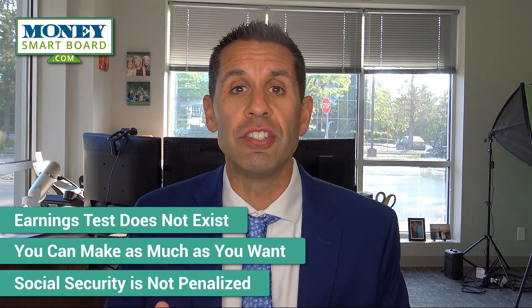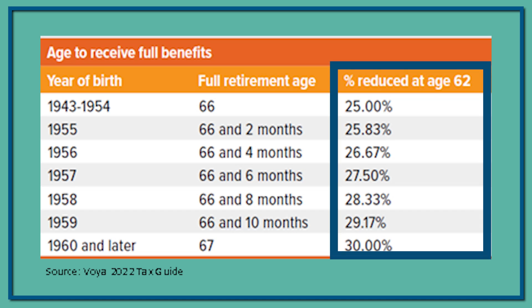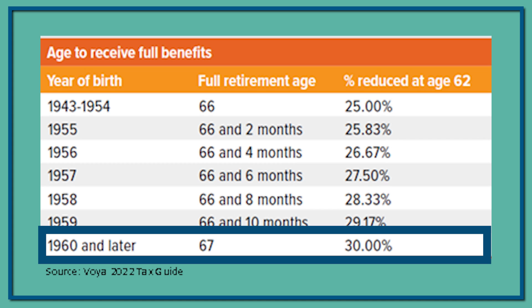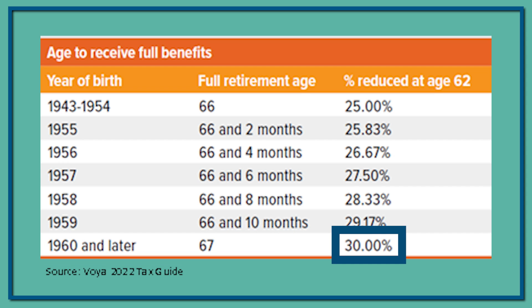We're only talking about the years that you have yet to reach your full Social Security age. Looking at the chart again, the far right column shows how much your Social Security benefit is reduced if you turn it on at age 62. If you were born 1960 or later and turn on your benefit at age 62, they permanently reduce your Social Security by 30% compared to waiting until age 67. That's a permanent reduction — the earnings test we're discussing is separate from that.